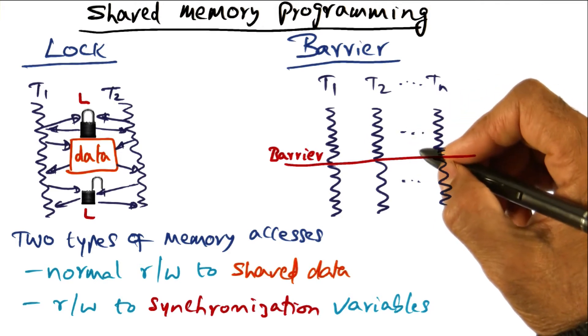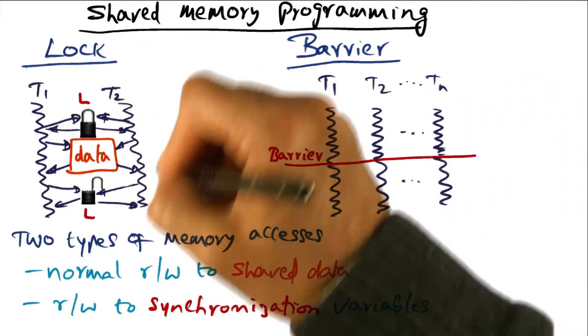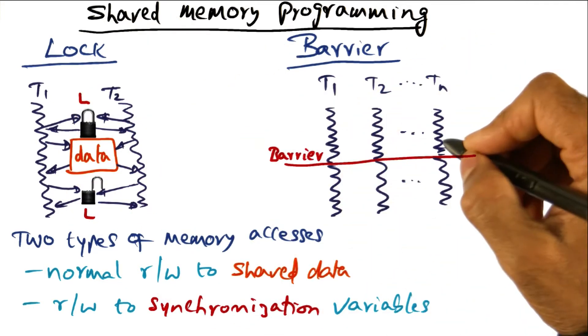in talking about what the operating system has to do in order to have efficient implementation of locks as well as barriers.